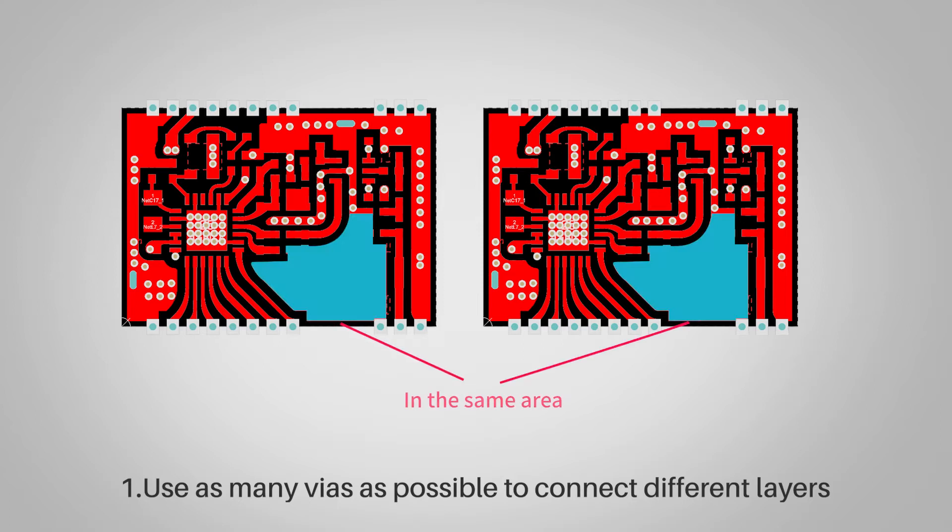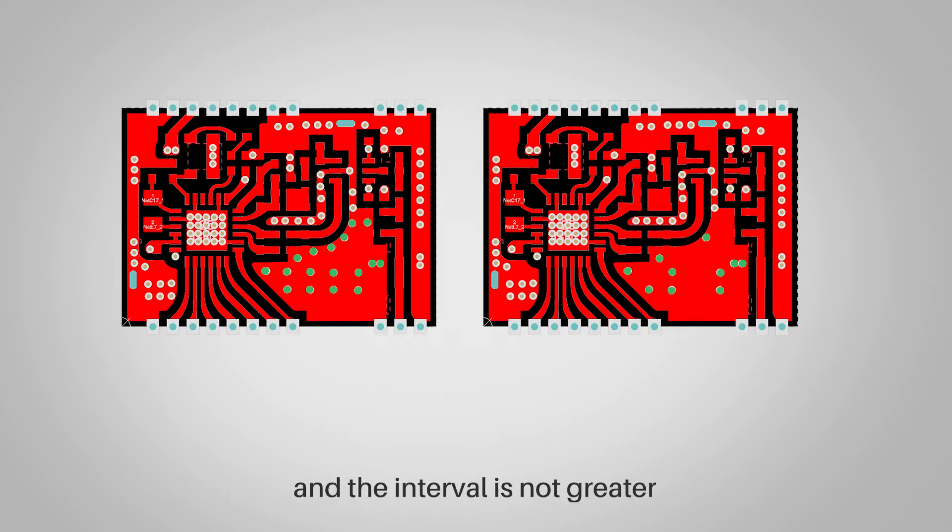Rule one: use as many vias as possible to connect different layers, and the interval is not greater than lambda slash 20 of the signal wavelength.